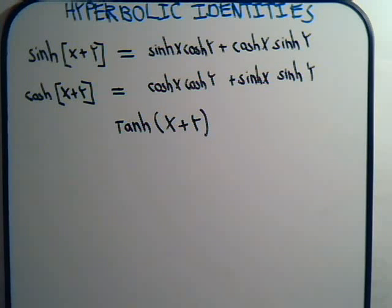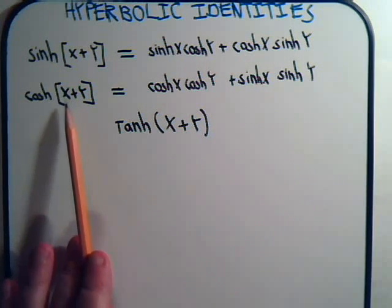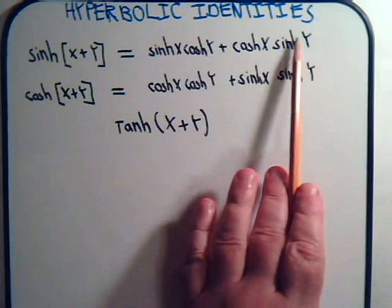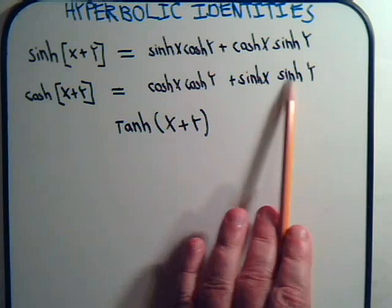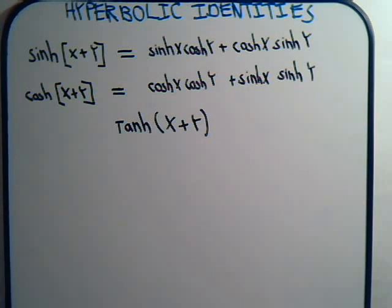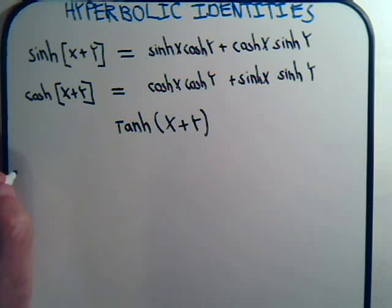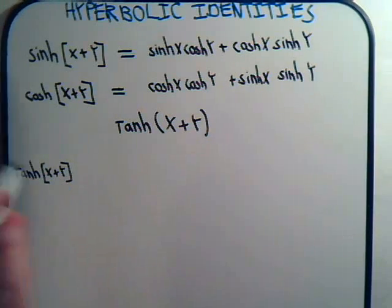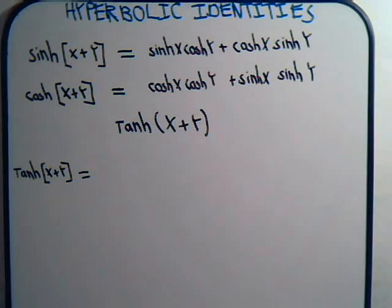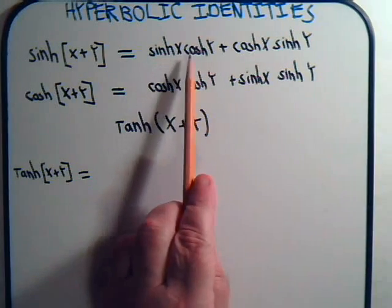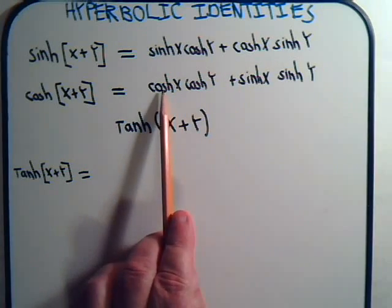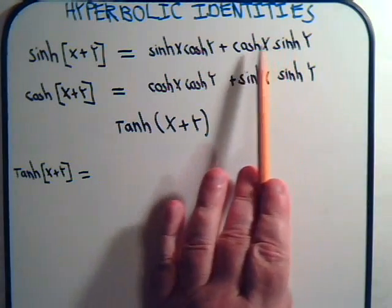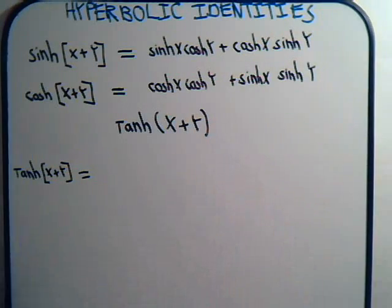That's going to be this divided by this — so we're going to have the sinh(x+y) expression divided by the cosh(x+y) expression. So it looks like we have our work cut out for us. We're going to say hyperbolic tangent of x plus y will equal this divided by this denominator.